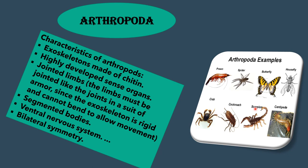Arthropods make up about 80% of the animal kingdom. They can be terrestrial or aquatic animals. Their bodies have a hard outer covering or exoskeleton made up of a proteinaceous substance called chitin. The body is divided into a head, thorax and abdomen, and it bears jointed legs in pairs of three to many for locomotion. Arthropods also have antennae and compound eyes on their heads. Insects such as honeybees and scorpions are examples of arthropods.